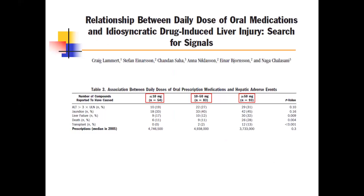Interesting work by Dr. Chalasani and Craig Lammert at Indiana University: if a patient takes three little pills and a big one and develops acute liver injury — which one is the culprit? Data shows more liver failure, death, and transplant with drugs that are more than 50 mg. Major causes of DILI — INH, acetaminophen, augmentin — are mostly large pills. If you want to guesstimate which drug is the culprit, pick the big pill.